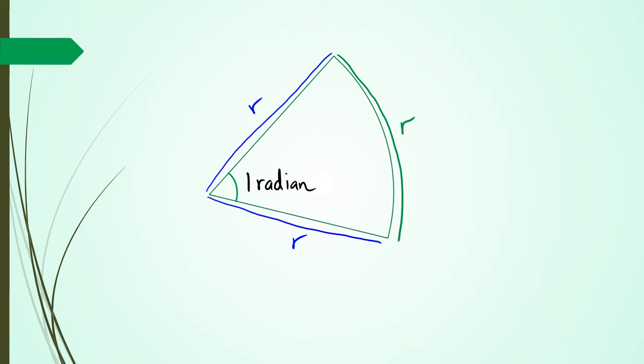I mean, kind of think of like a very weird, I wouldn't really call it an equilateral triangle, but the idea is that this distance is the same as this distance and the same as this distance, but the angle itself is one radian.